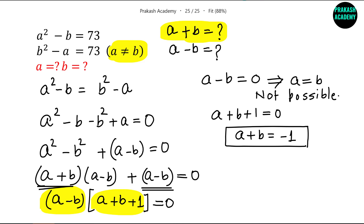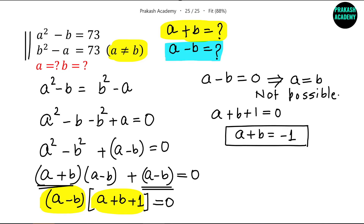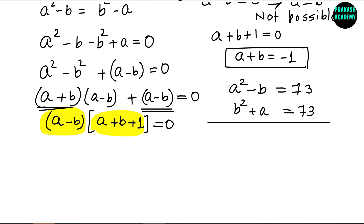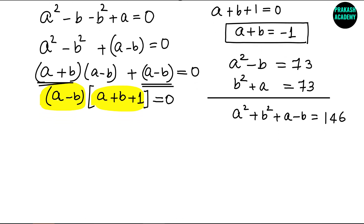Now we need to find A minus B. To do this, we first need A² plus B². We take the two original equations and add them: A² minus B equals 73, and B² minus A equals 73. Adding gives A² plus B² minus A minus B equals 146.